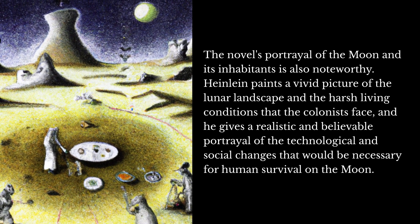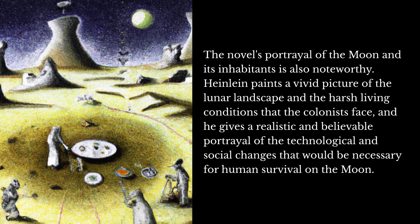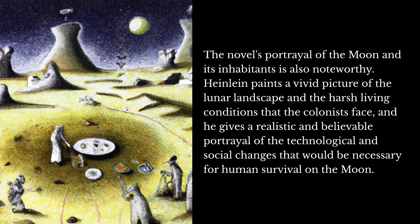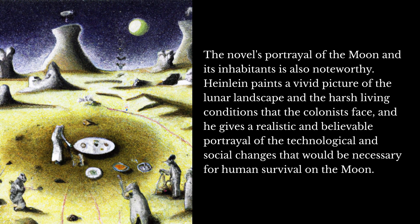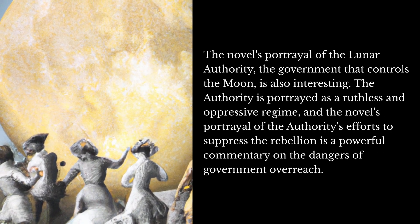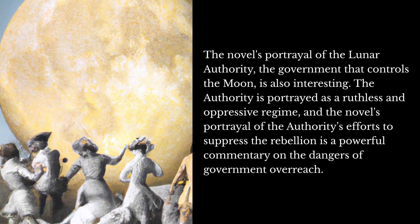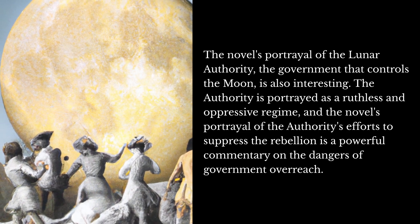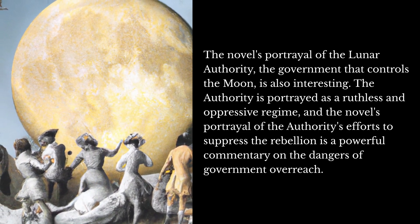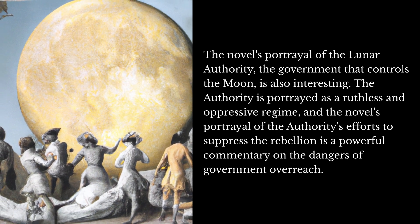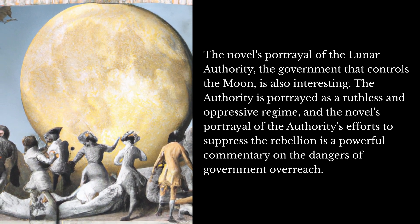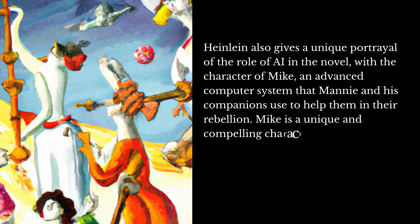Heinlein paints a vivid picture of the lunar landscape and the harsh living conditions that the colonists face, giving a realistic and believable portrayal of the technological and social changes necessary for human survival on the moon. The lunar authority — the government that controls the moon — is portrayed as a ruthless and oppressive regime, and its efforts to suppress the rebellion serve as a powerful commentary on the dangers of government overreach.